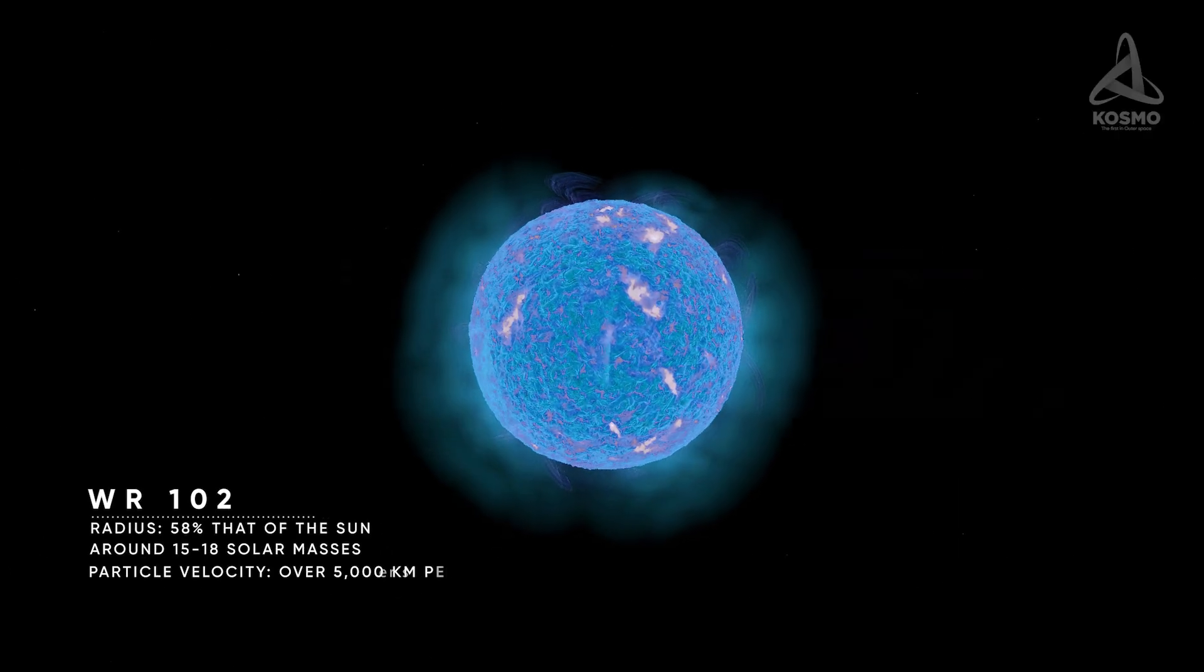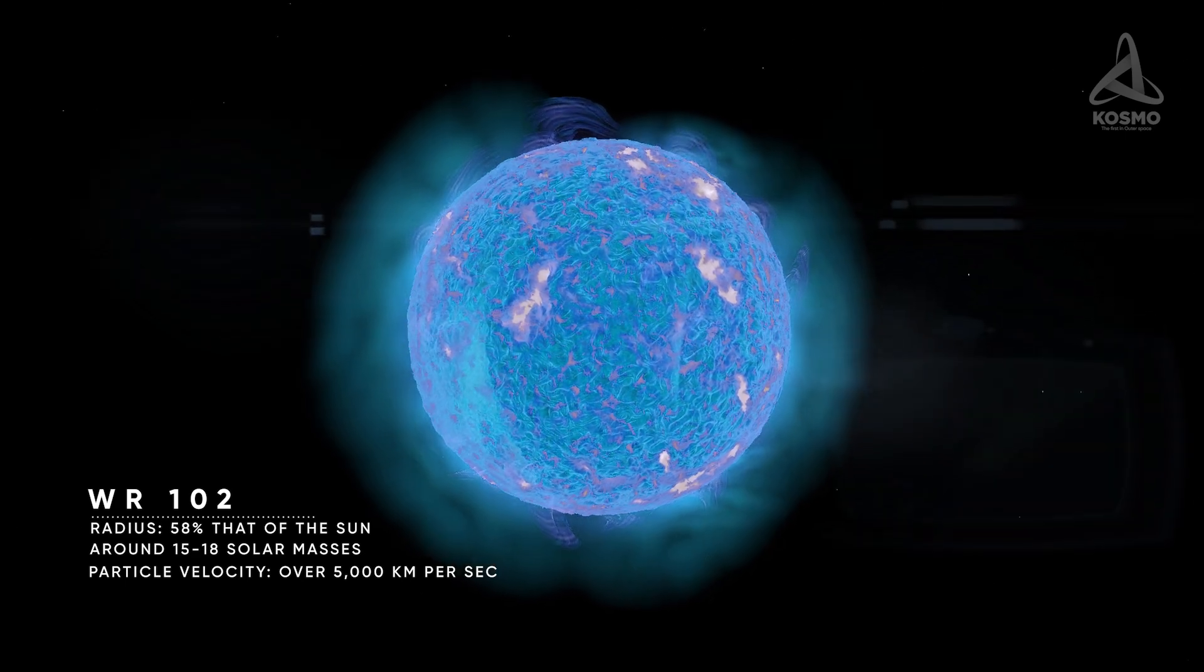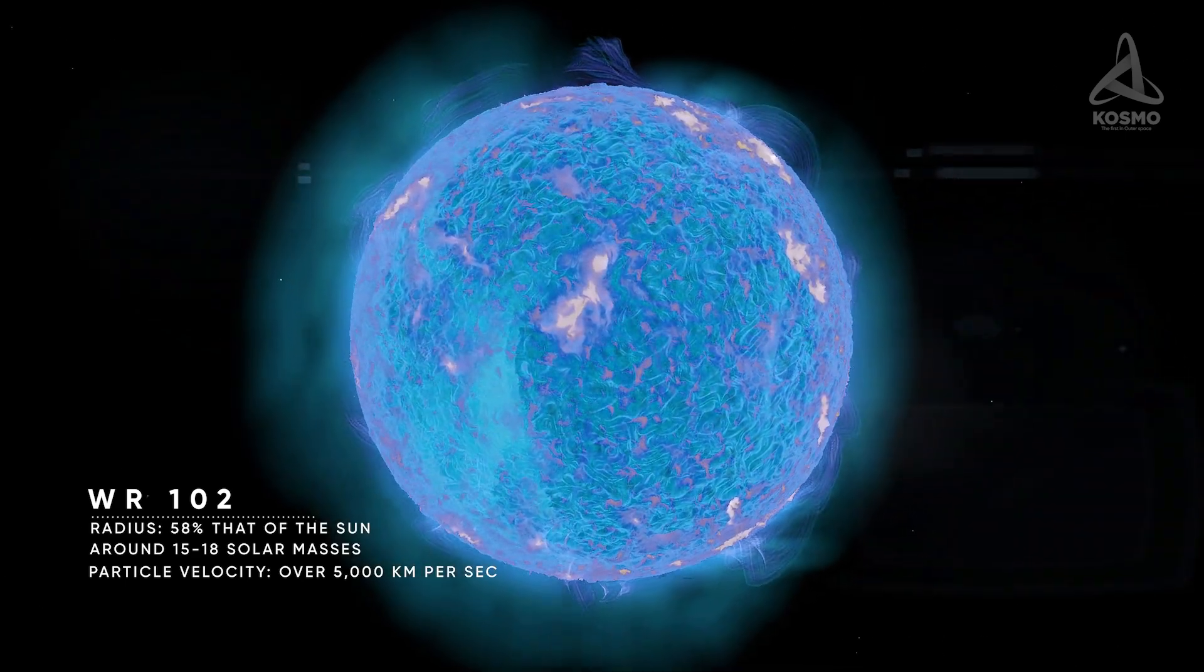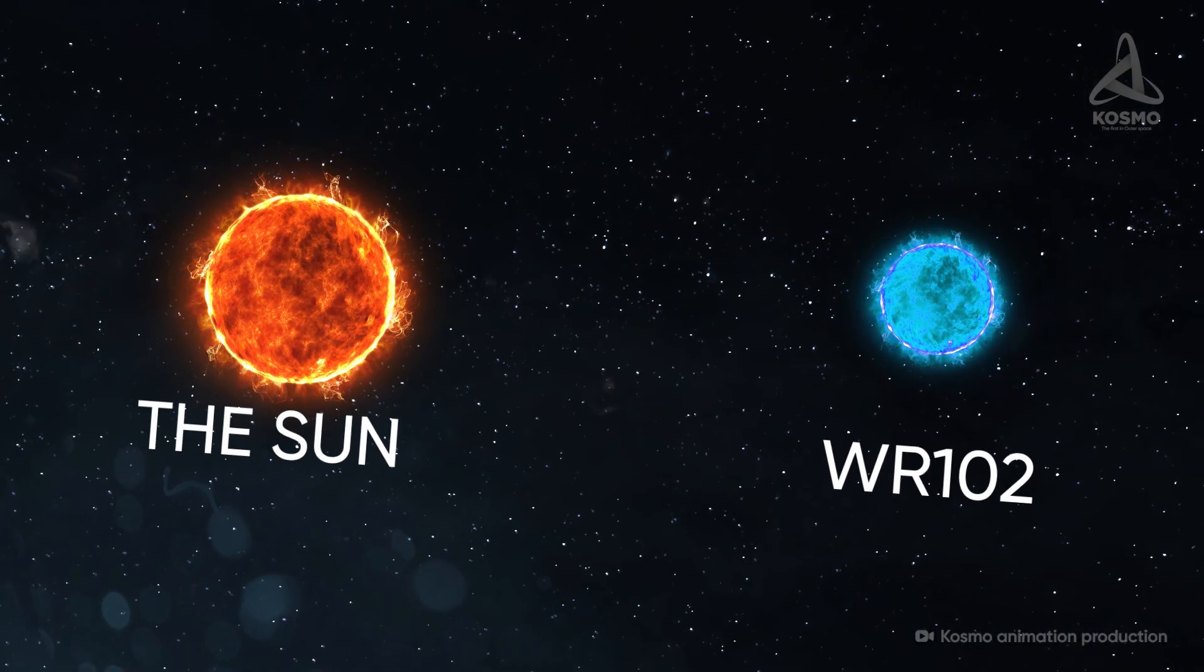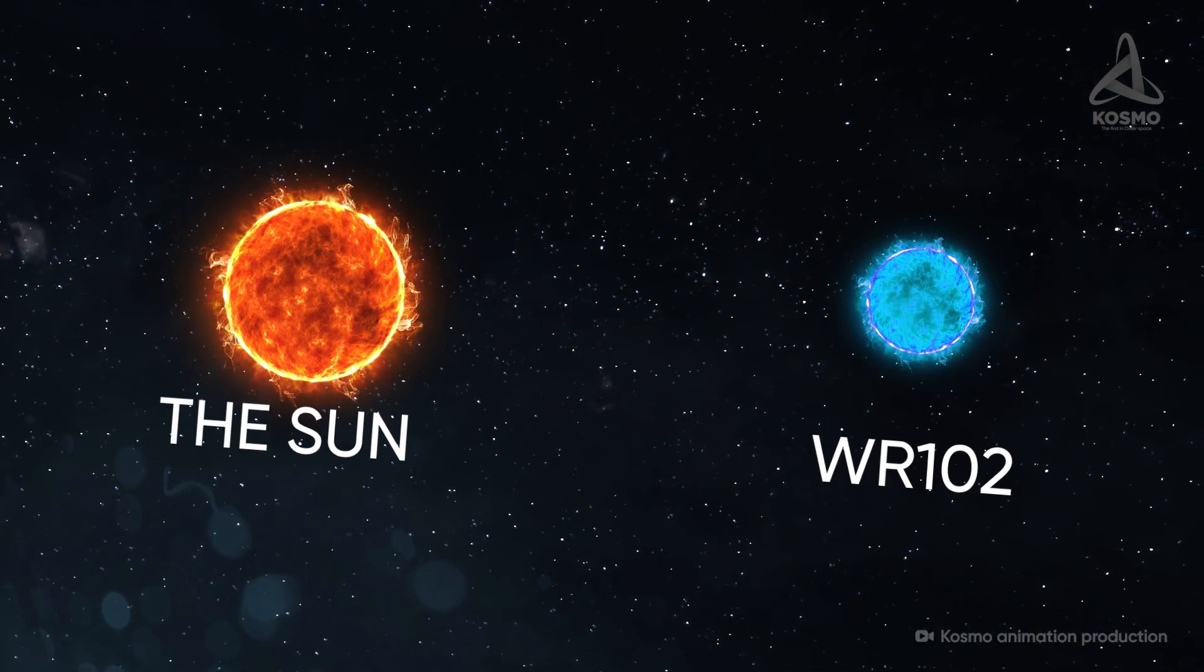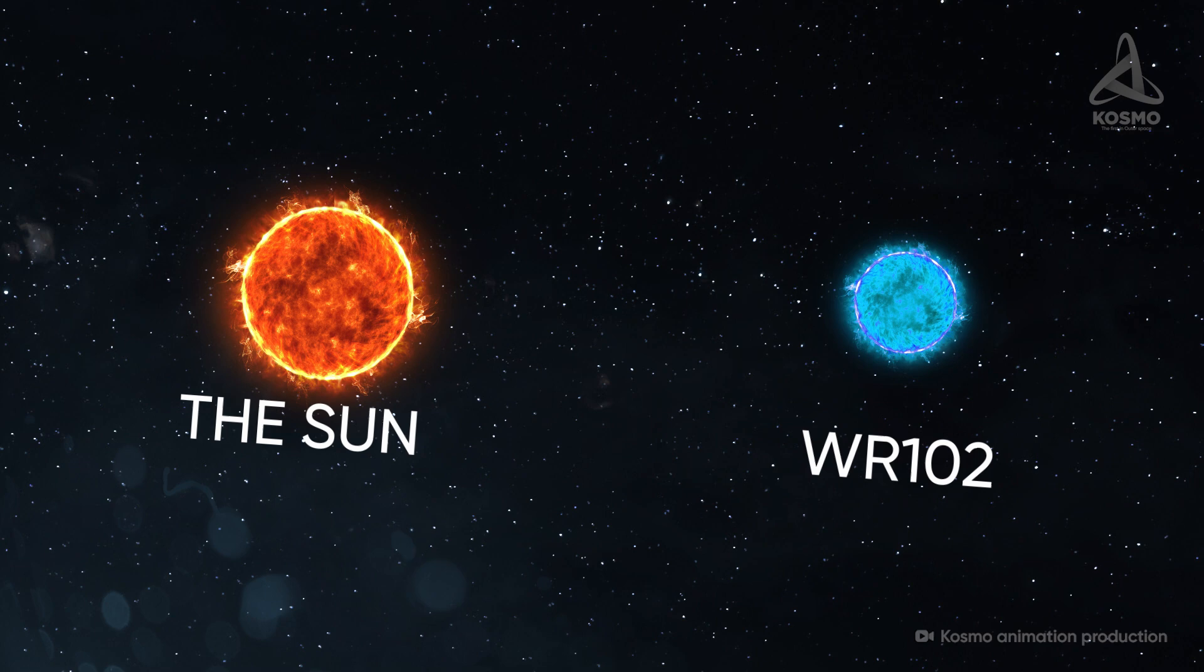Being of comparatively modest dimensions, WR102 is notably quite a dense star. With its radius measuring just 58% that of the Sun, its mass, on the other hand, is estimated at 15 to 18 solar masses.